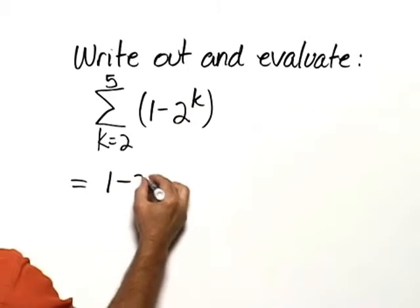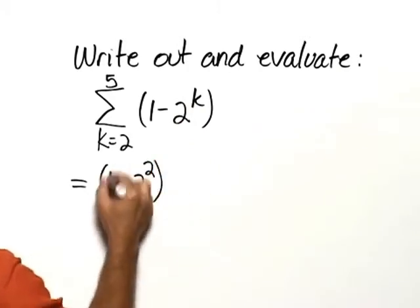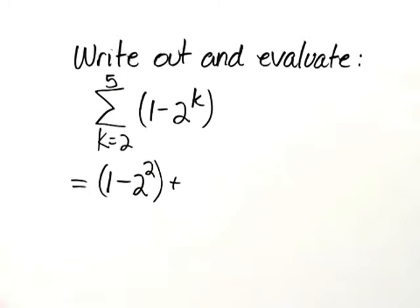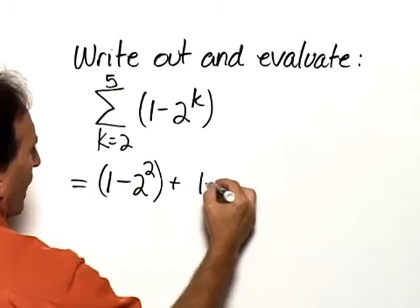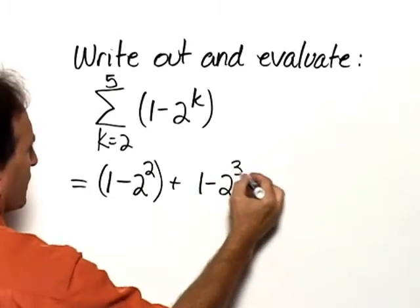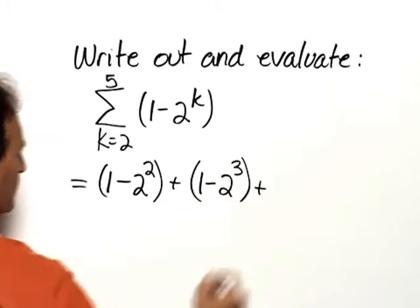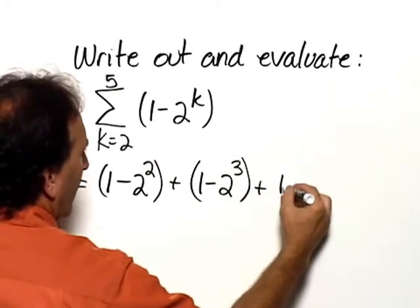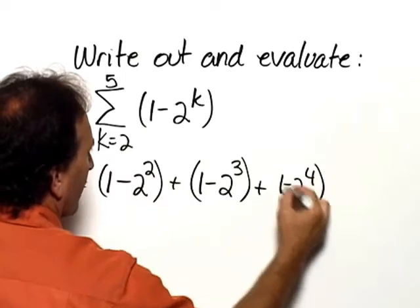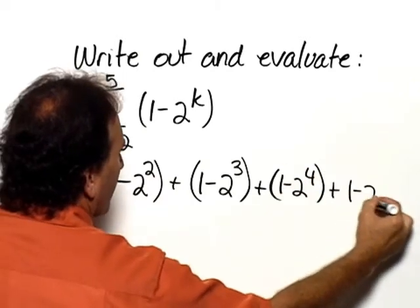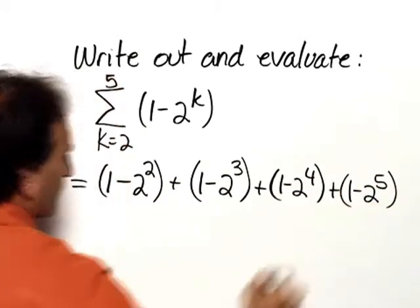This would be 1 minus 2 squared plus, now we substitute in 3, 1 minus 2 cubed, plus, now we substitute in 4, 1 minus 2 to the 4th, plus 1 minus 2 to the 5th.